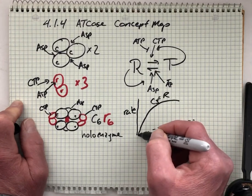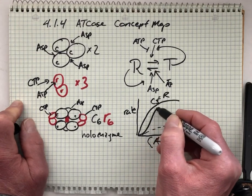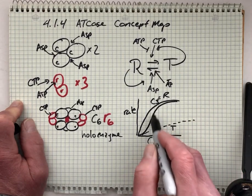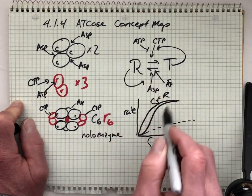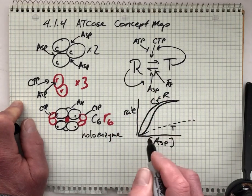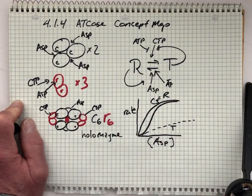And then the ultimate S-shaped curve, we arrive at that by thinking about, at some point we tip the balance between R and T forms to favor the R form, and we get this S-shaped sigmoidal curve.